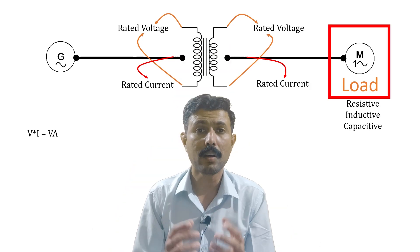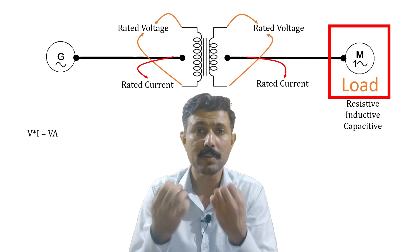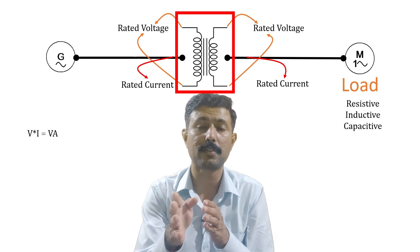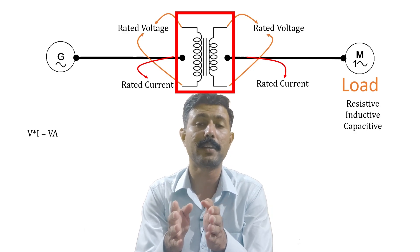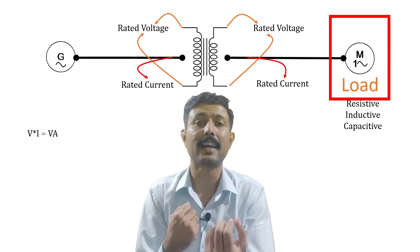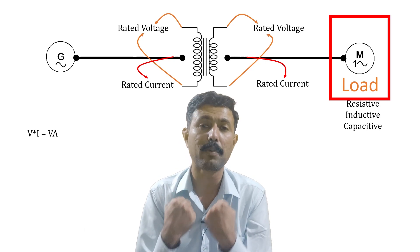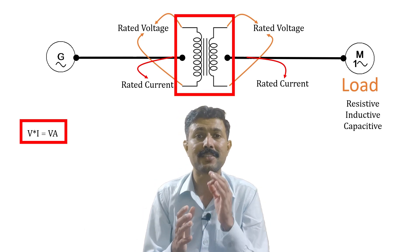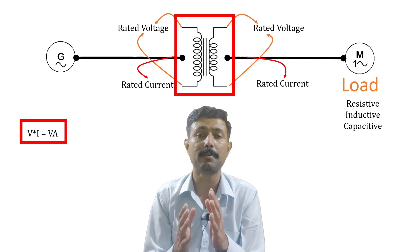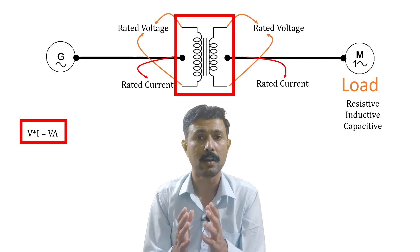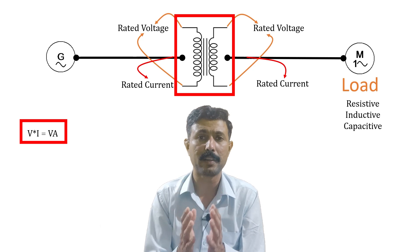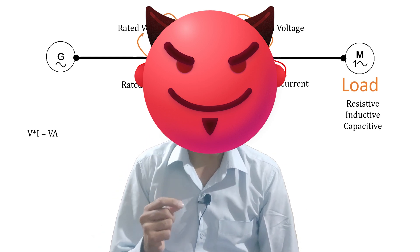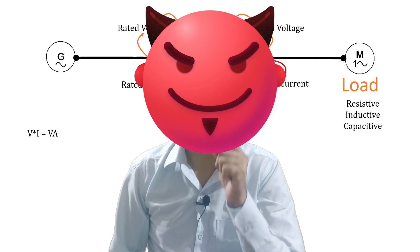That product of rated voltage and rated current is ultimately the apparent power. It is the load that decides how much active and reactive power to draw — not the transformer. The load demands a certain amount of active power and a certain amount of reactive power. That is why the transformer is rated on apparent power, which is the VA rating. This is the simplest explanation of why a transformer is rated in VA.